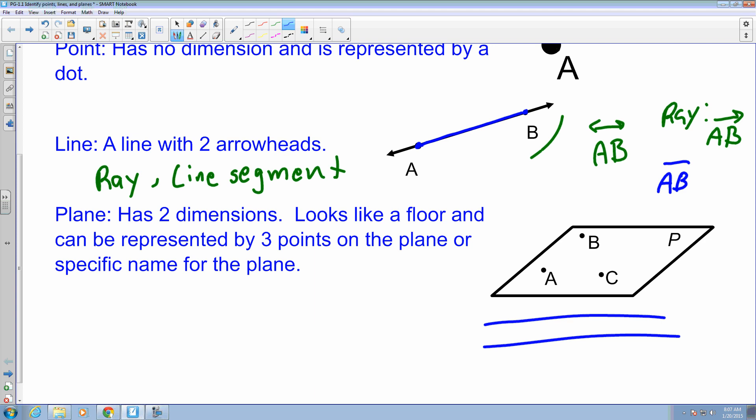It looks like a floor and can be represented by either three points, which in this case is points A, B, and C, which they're on the plane. And you could also give it a name, like for instance we could just say this is Plane P or whatever name you choose to give that one. And those are the two different ways that you can name it.